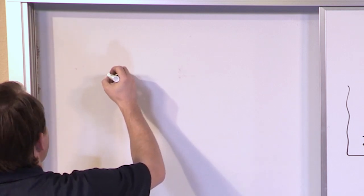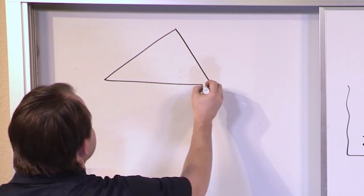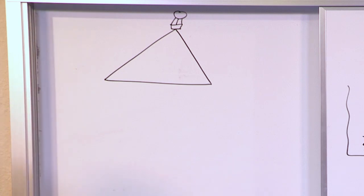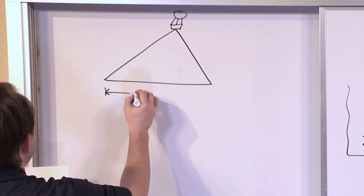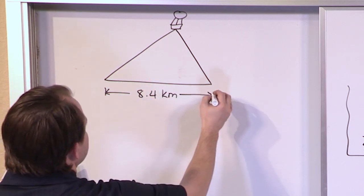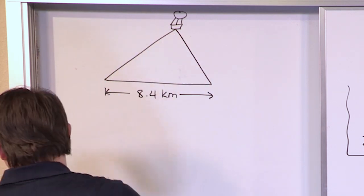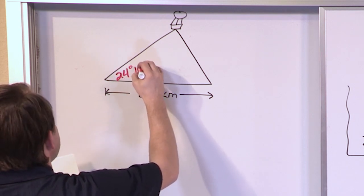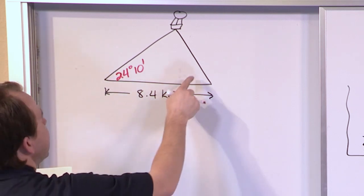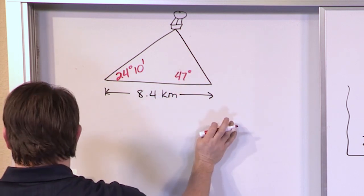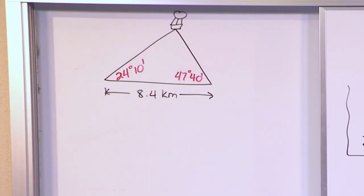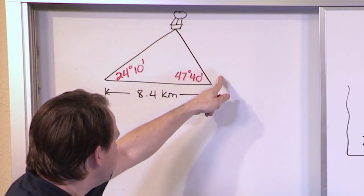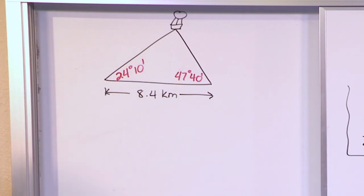For the next problem, we have a triangle with a hot air balloon at the top. Two strings are tied to the balloon from the ground. The base between the two anchor points is 8.4 kilometers. One angle is 24 degrees 10 minutes, and the other is 47 degrees 40 minutes. The question is: what is the height of the balloon above the ground — the vertical height straight down?